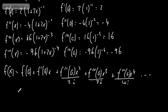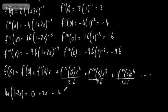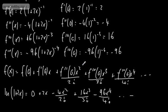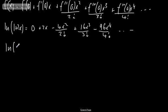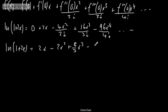So f(0) = 0. Then ln(1+2x) = 0 + 2x + (−4)x²/2! + 16x³/3! + (−96)x⁴/4!, and so on. We can see this tidies up to give us exactly: ln(1+2x) = 2x − 2x² + 8/3·x³ − 4x⁴, since 96/24 = 4.